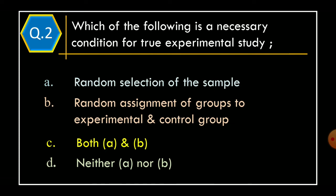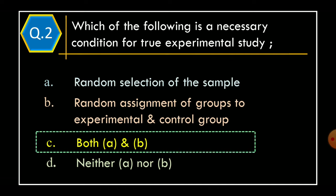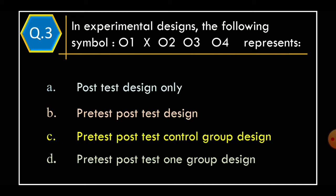And correct option is Option C: both Option A and B. Question 3: In experimental designs, the following symbol O1, X, O2, O3, O4 represents...